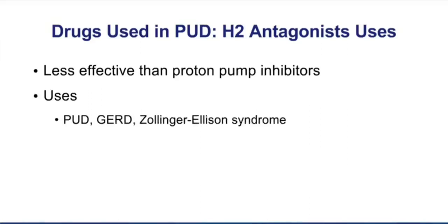Overall, H2 blockers are much less effective than proton pump inhibitors for Zollinger-Ellison. Regarding GERD, today the most common strategy for treating patients with GERD is to use drugs that stop acid production — H2 blockers or proton pump inhibitors. Initially you can try an H2 blocker, but many patients are going to move on and take a proton pump inhibitor to stop their GERD.